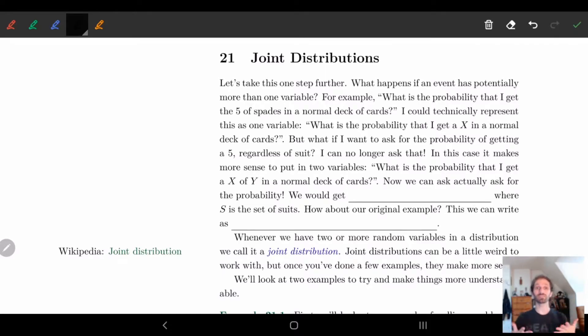Hi y'all. So in this video we're going to be talking about joint distributions, and we kind of looked a little into this in the last one. In essence, the idea here is what happens if we have more than one variable?